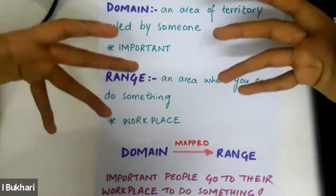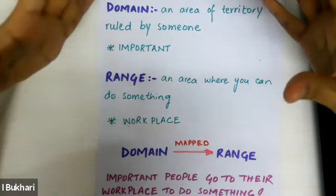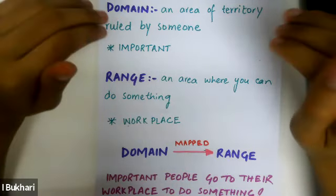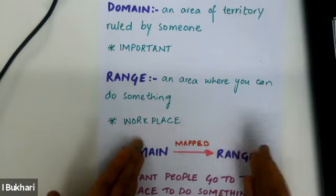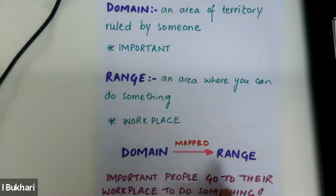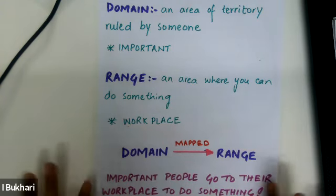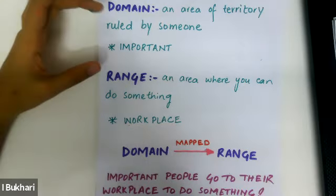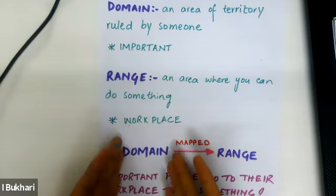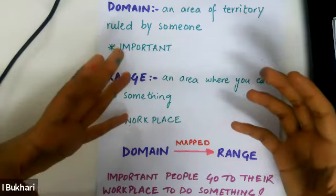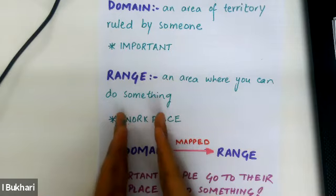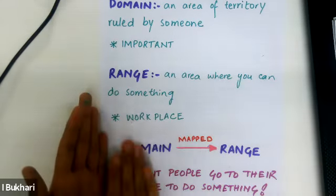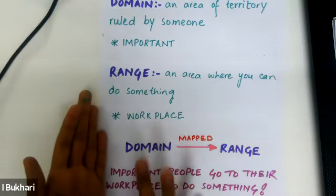We also call a firing area a range — it's a workplace. A domain is always mapped onto the range. Even the word 'domain' sounds like 'dominant,' so a dominant entity maps onto the range. Domain is always mapped onto a range, and range is never mapped onto the domain.